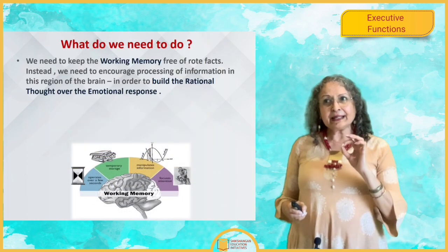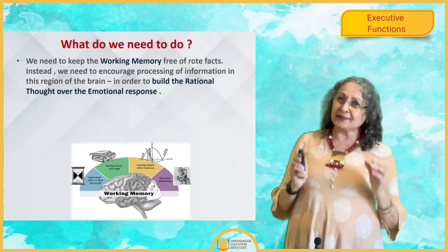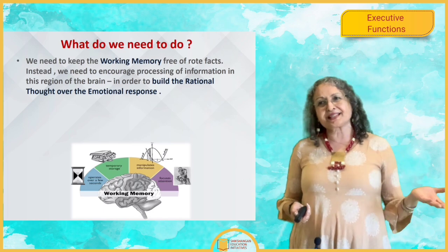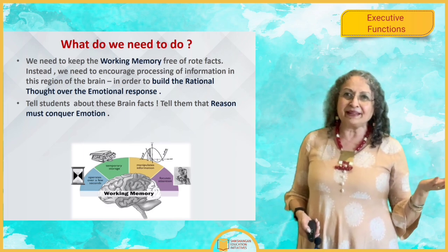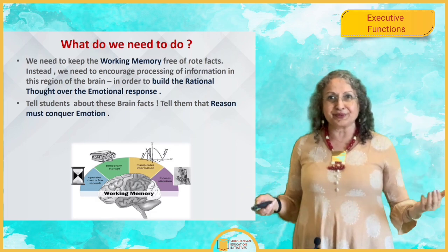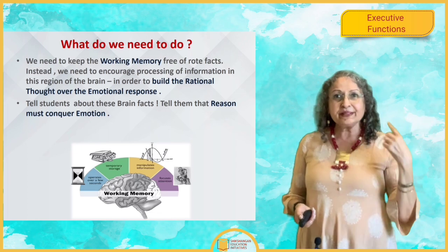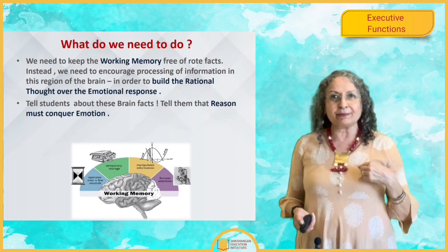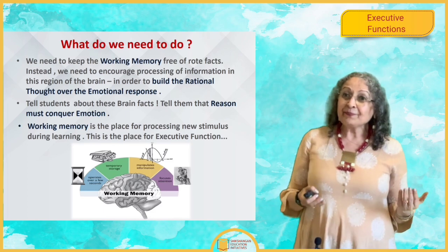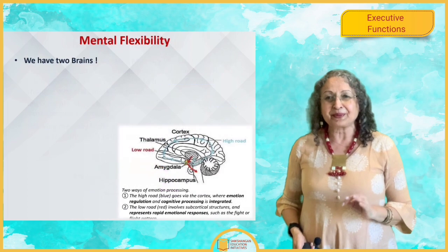How do we develop these three things? Number one — for working memory, keep it free of rote memorization. The working memory has limited space. If you cram a lot of rote memorization facts into it, it will not be able to process new information coming to it. So keep it free so that rational thought can be developed and an emotional response doesn't dominate. I would also strongly suggest telling children directly about these brain facts — tell them that reason must conquer emotion, that the head is above the heart. The working memory is the place for processing new stimulus during learning, and this is where executive function is actually developed.